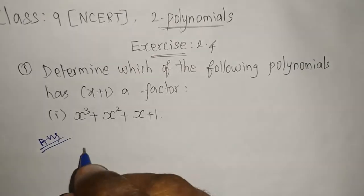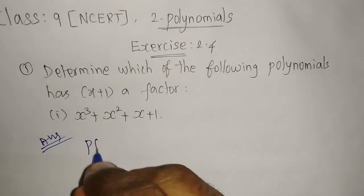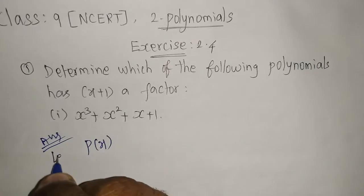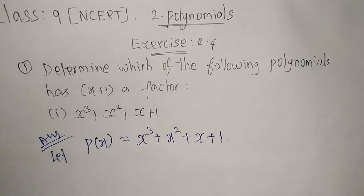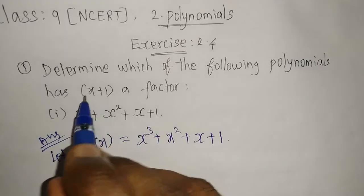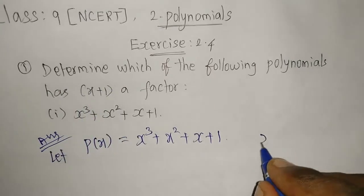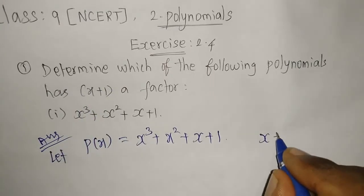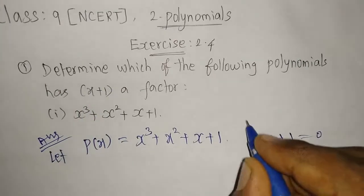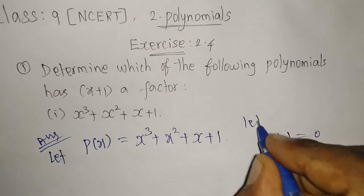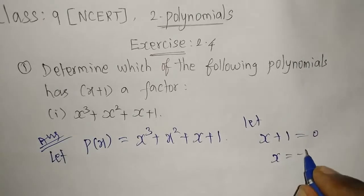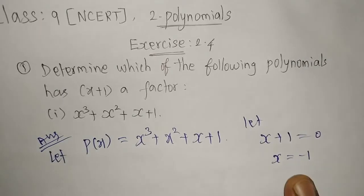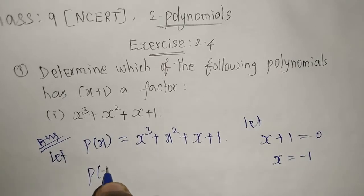The given polynomial I'm going to take as p(x). They ask us to check whether (x+1) is a factor or not. So I set x + 1 = 0, which gives us x = -1. This value of x = -1 we will substitute into the given polynomial.